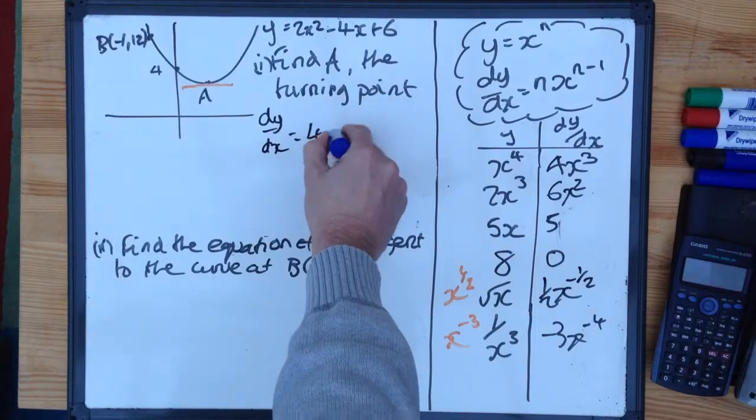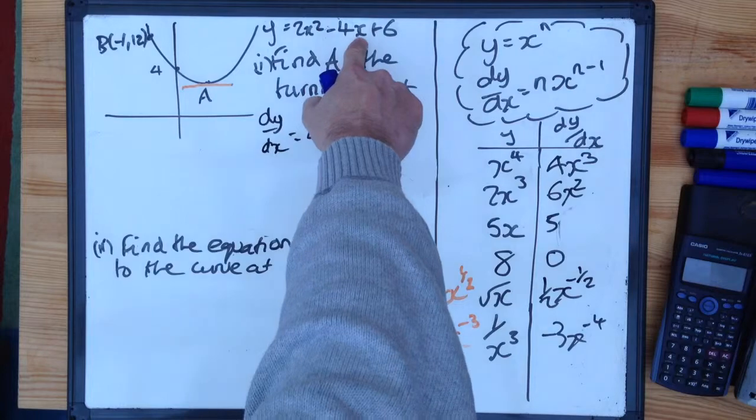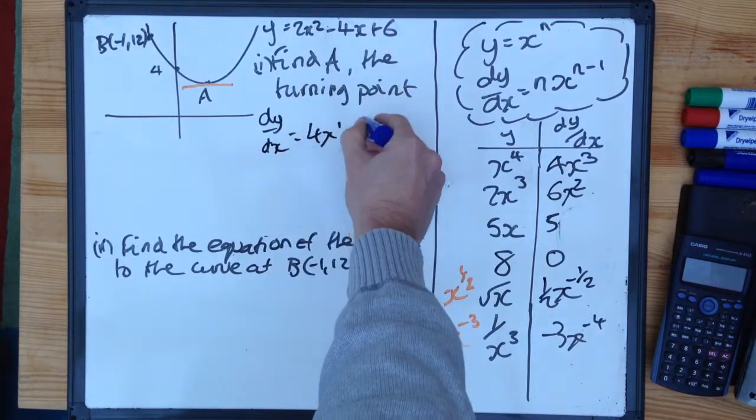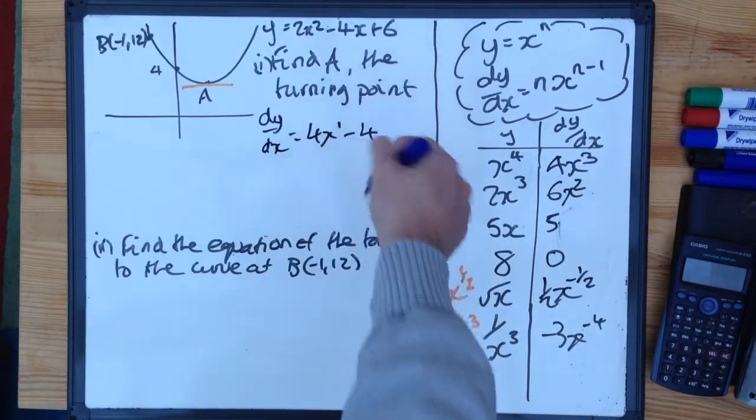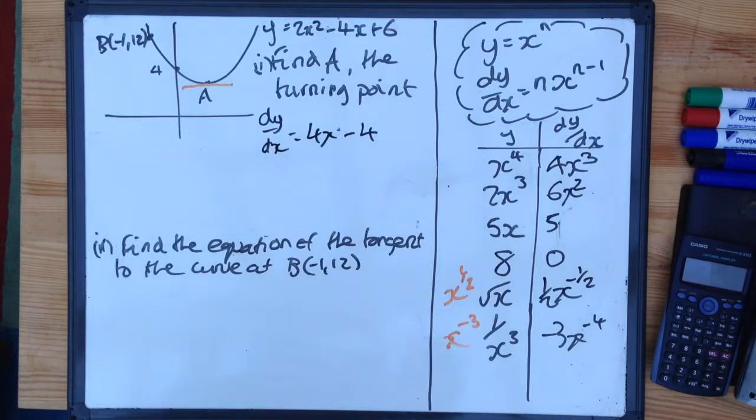dy/dx is equal to times by the power, 4x, 1 off the power, 1. Don't really need to put that one there, but we will. Differential of anything with just an x in is this, minus 4. Differential of just a number is 0. So my differential is 4x minus 4. Get rid of that power of 1 because it's not necessary.